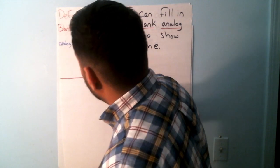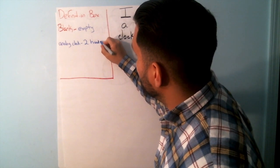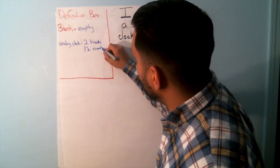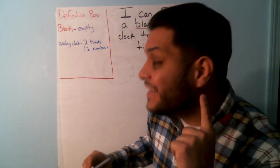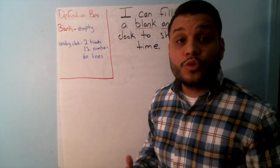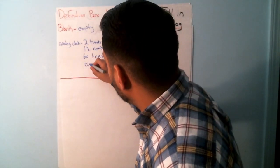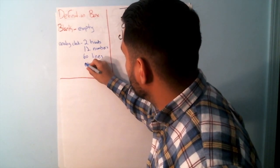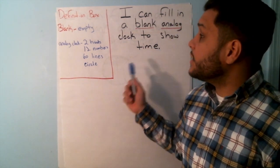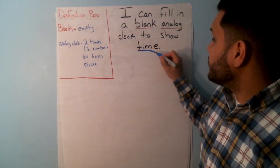The word 'analog clock' — we should be pros at this already. An analog clock has how many hands? Yes — two hands. How many numbers? Yes — 12 numbers. How many lines? 60 lines. And it's usually in the shape of a circle. Perfect! So these are our definition words today. We are going to be using a blank analog clock to tell time. Awesome job!